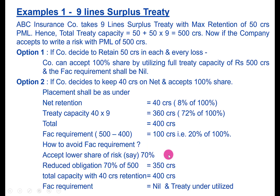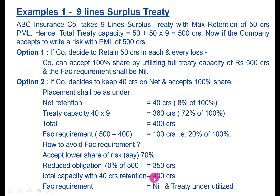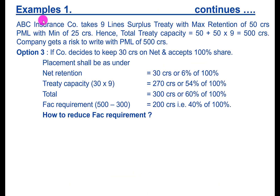To avoid FACA, reduce your share. Instead of 100 percent, accept only 70 percent of the risk. In that case the reduced obligation shall be 350 crores. Since total capacity with 40 crores retention is 400 crores, you only need to place 350 crores, so the FACA requirement would be nil.